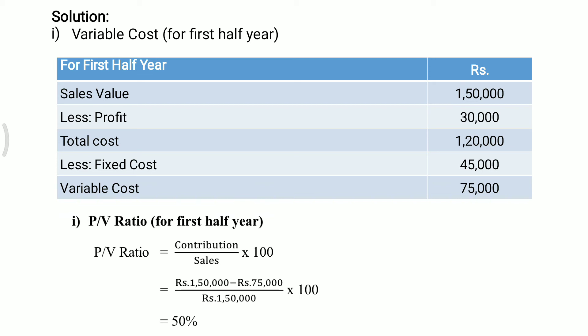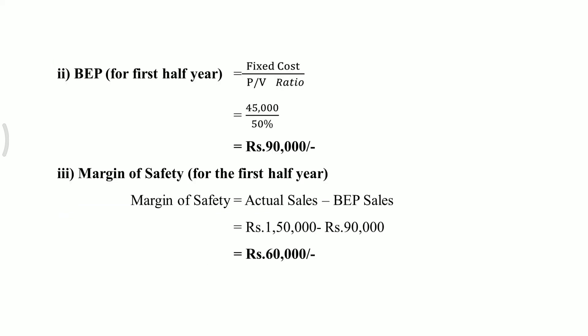Next, calculation of BEP for the first half year. The formula is fixed cost divided by PV ratio. Fixed cost is 45,000 divided by PV ratio 50 percent. We get BEP rupees 90,000 for the first half year.